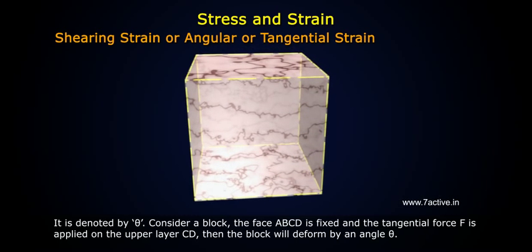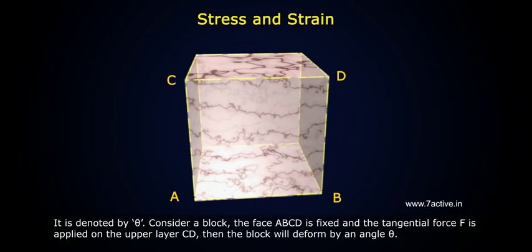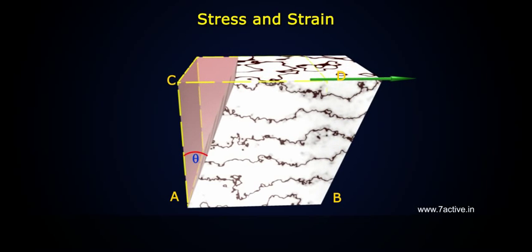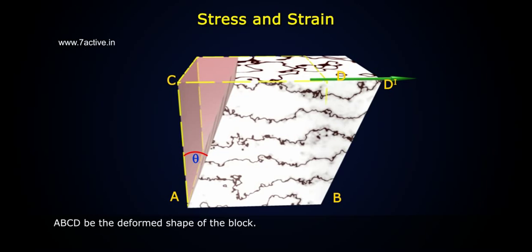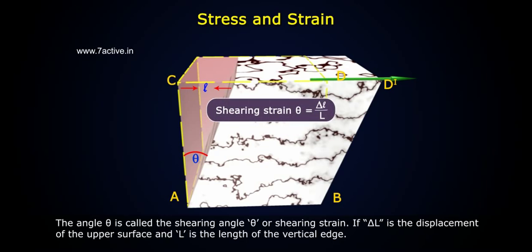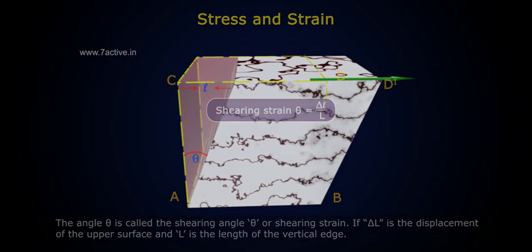Consider a block A, B, C, D. The base is fixed and the tangential force F is applied on the upper layer C, D. The block will deform by an angle theta. A, B, C, D is the deformed shape of the block. The angle theta is called the shearing angle or shearing strain. If delta L is the displacement of the upper surface and L is the length of the vertical edge, then shearing strain theta is equal to delta L by L.